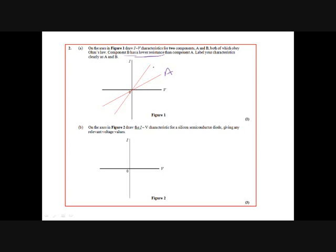On the axis of figure two, draw the IV characteristics for a silicon semiconductor diode. So we can have over here at about minus 50 volts they tend to break down. Then we need to go along the axis and then very steeply upwards here, where this starts from about 0.6 volts. Again, but the relevant voltage values on - don't forget those two, as well as the actual shape of the curve.